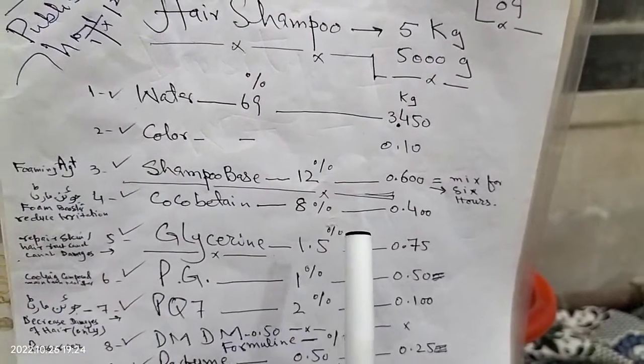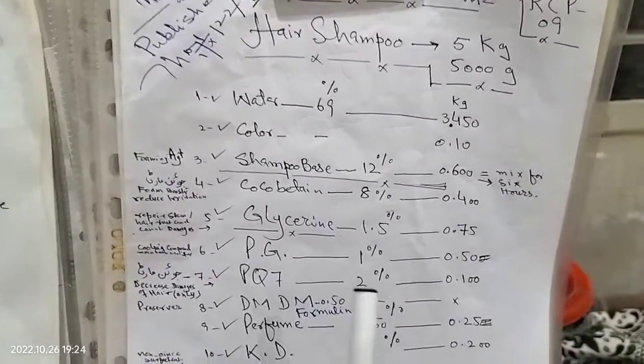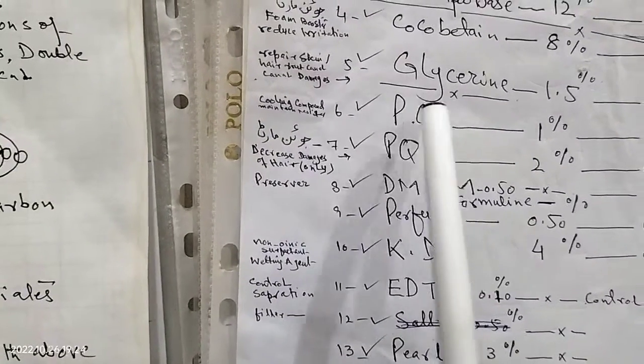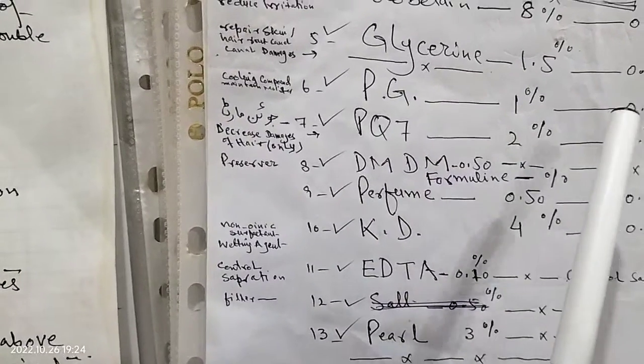PG 1.5%, 75 gram. PG is a cooling compound. PG 1%, 50 gram.